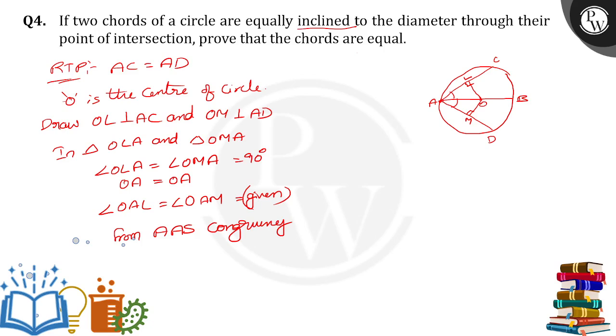By using AAS congruency criteria, triangle OLA is congruent to triangle OMA. When the two triangles are congruent, from CPCT their corresponding parts are equal. OL is equal to OM. When the perpendicular distances from the center are equal, then automatically the chords are equal. So AC is equal to AD.